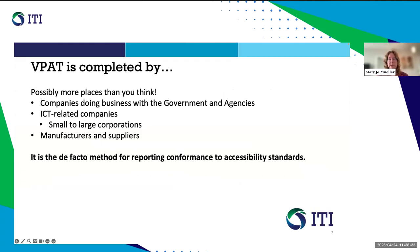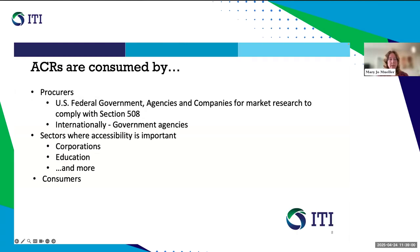Many different organizations produce ACRs using the VPAT. This includes companies that do business with governments or government agencies, information and communications technology-related companies ranging from small to large corporations, as well as manufacturers and suppliers who want or need to provide ACRs for their products and services. Using the VPAT is the de facto method for reporting product conformance to accessibility standards. ACRs are often read by procurers — people making purchasing decisions for federal governments — and are also used in the procurement processes of many international government agencies. ACRs are used in sectors where accessibility is a priority, such as private sector corporations, education, banking, transportation, and many other business sectors. They are also often read by consumers who want to better understand if a product is accessible for their needs.